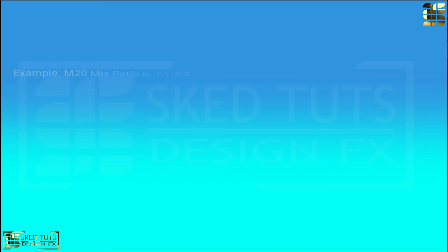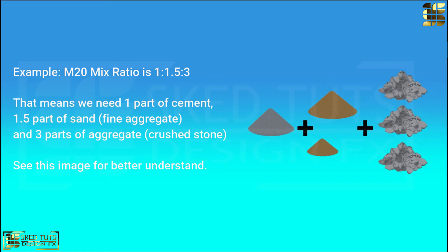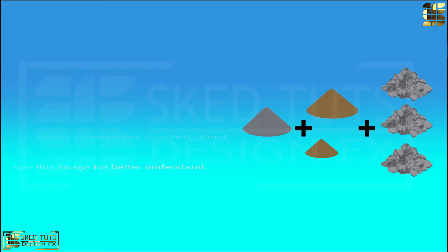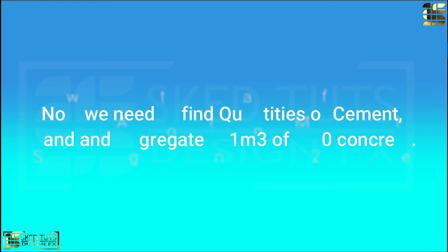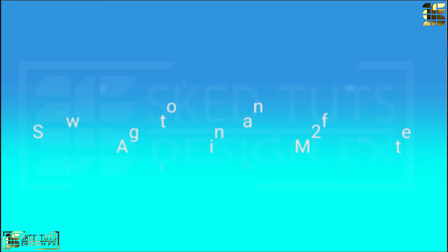Example, M20 mix ratio is 1 to 1.5 is to 3. That means we need 1 part of cement, 1.5 part of sand and 3 part of aggregate. See this image for better understand. Now we need to find quantity of cement, sand, aggregate and water in 1 cubic meter of M20 concrete.